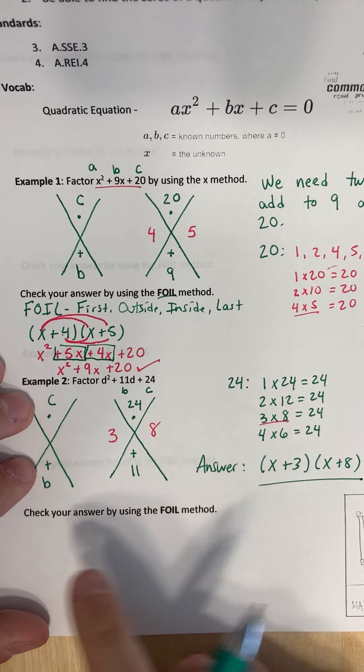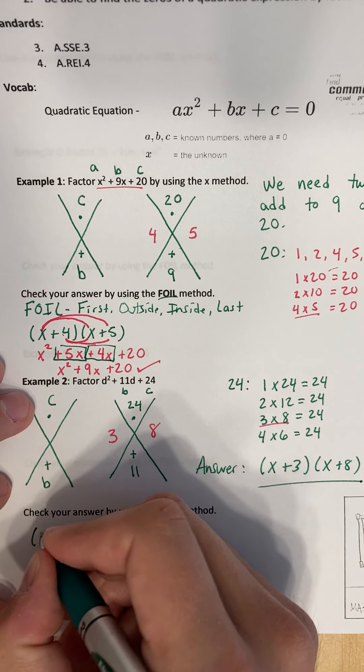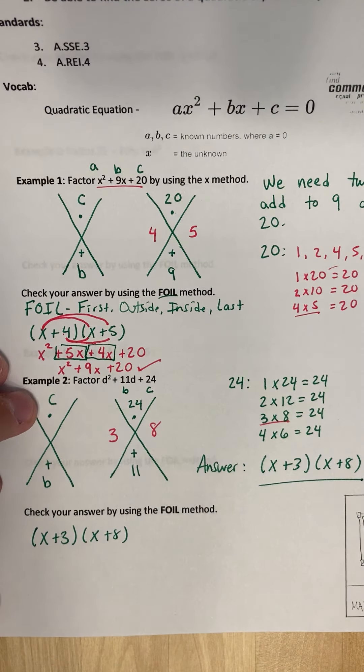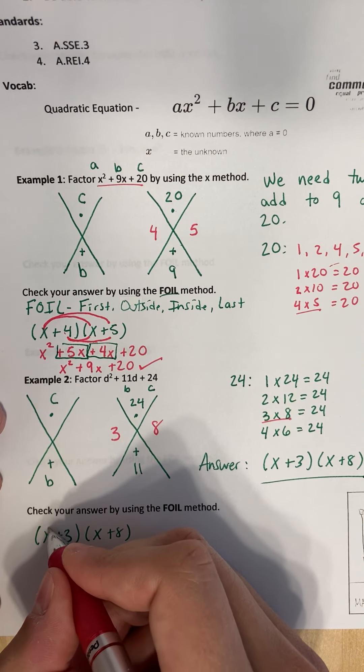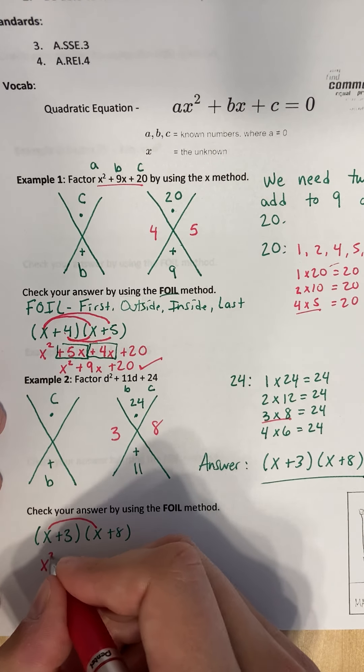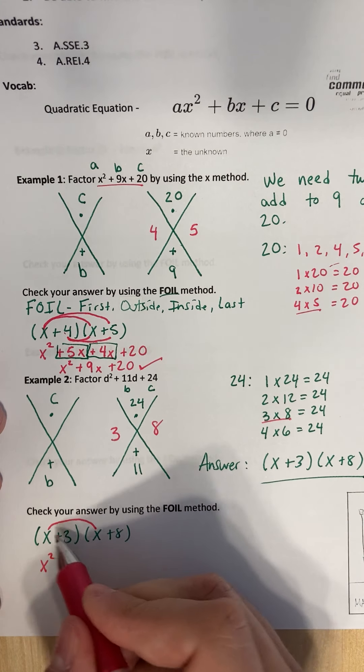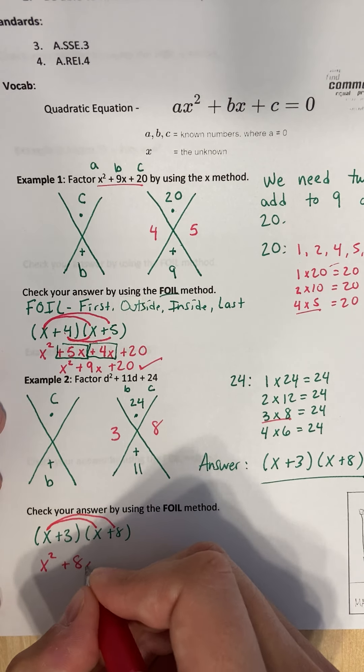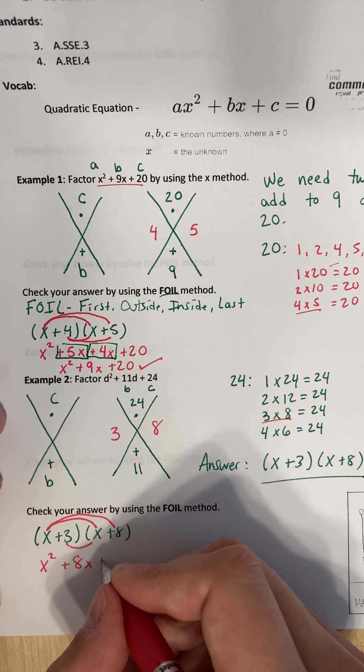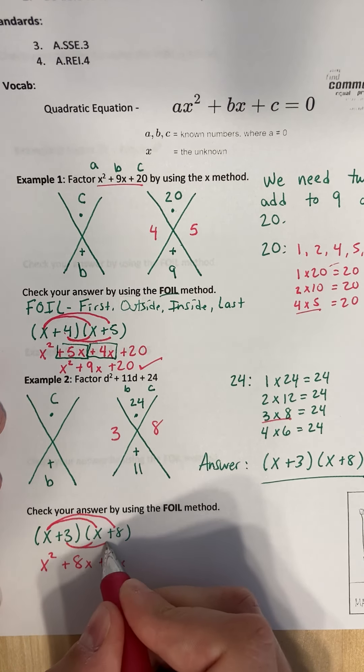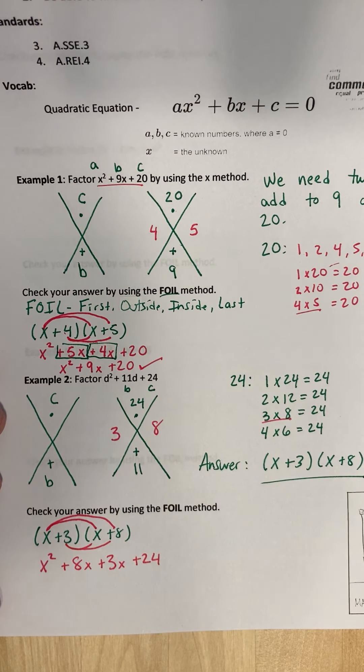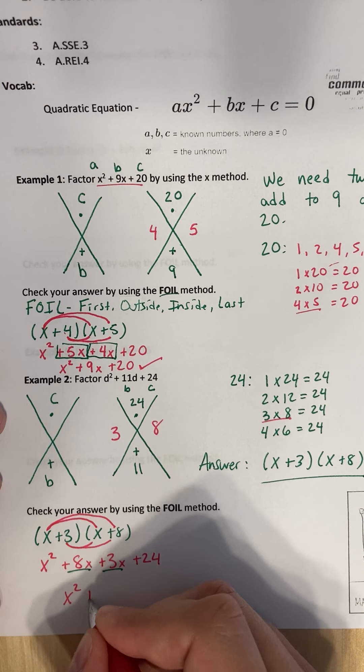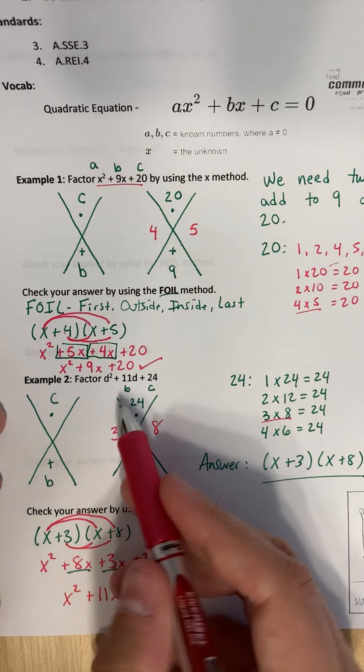So we can write our answer as x plus 3 and x plus 8. That's our answer. Now let's check it using the FOIL method. So x plus 3, x plus 8. We're going to FOIL. So first we'll do the x's. So that gives us x squared. Remember this is multiplying. And then x times 8 is 8x. 3 times x would be 3x. And 3 times 8 would be 24. When you combine these two, you get 11x. So we get x squared plus 11x plus 24. Is that what we started with?